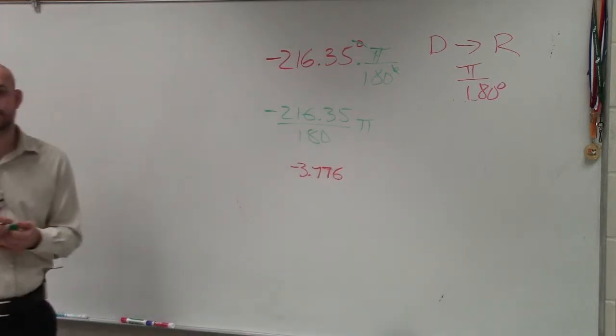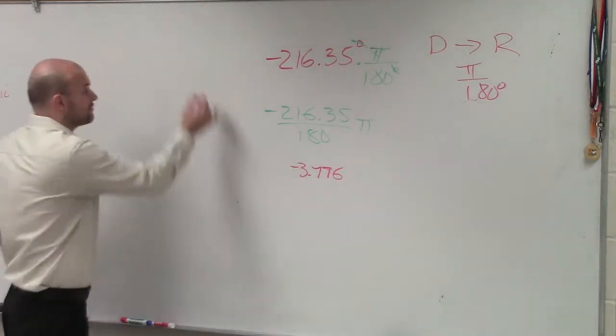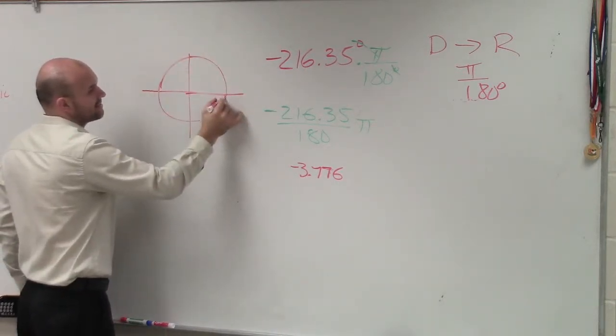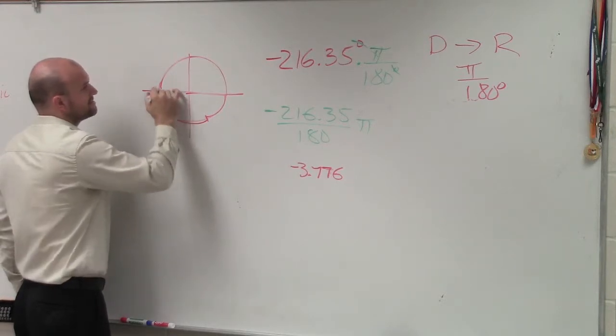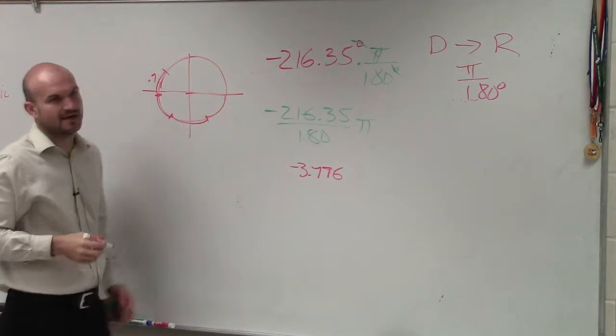All right? So that is in radians. That's radians. So if you were to graph that, radius, one radian, two radians, three radians. And that's like 0.7 of a radian, right? Something like that. Yes?